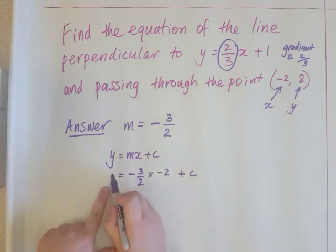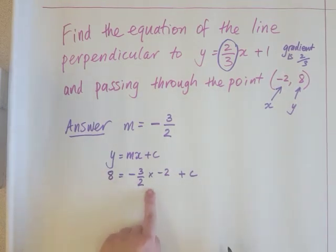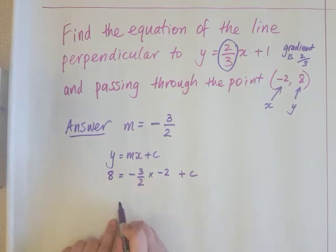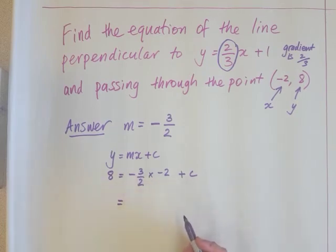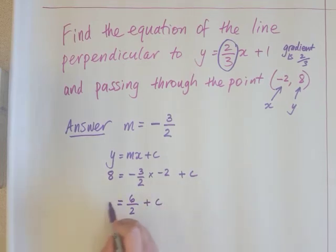So now let's calculate this multiplication here. Negative three over two multiply negative two. So top line, negative three times negative two is positive six. Bottom line over two. So six over two, we know that's three.